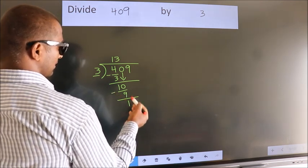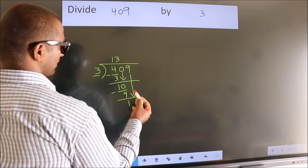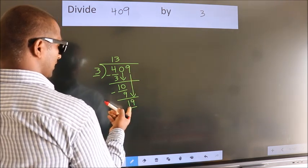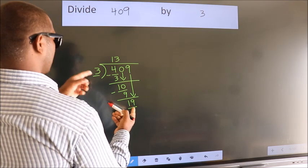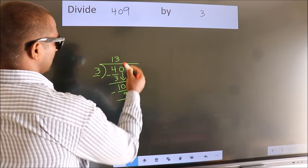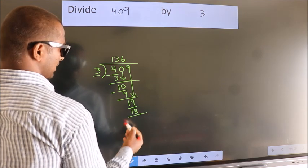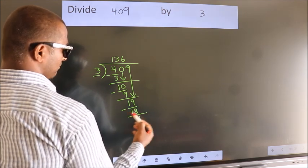After this, bring down the beside number. So 9 down. So 19. A number close to 19 in 3 table is 3 6 18. Now we subtract. We get 1.